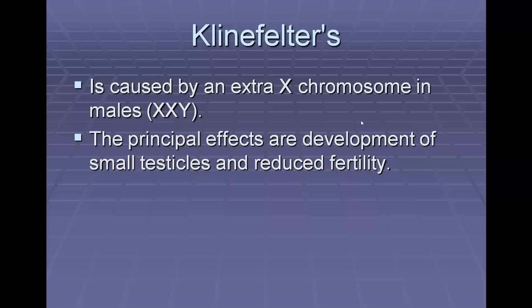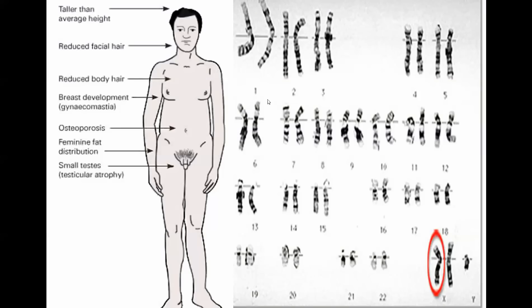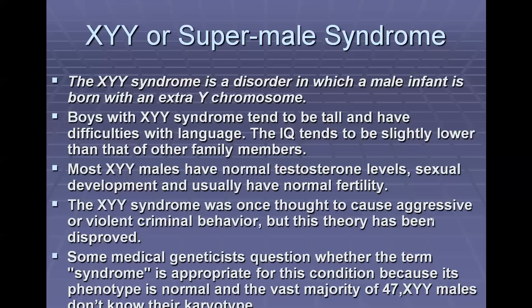Klinefelter syndrome is caused by an extra X chromosome in males, making them XXY. The principal effects are development of small testicles and reduced fertility. The karyotype shows everything paired normally except for the extra X chromosome. XYY or super male syndrome also occurs when homologous chromosomes don't separate properly. Boys with XYY tend to be fairly normal but just a little taller, with IQs that can be a little lower, and they can have difficulties with language. Whether it truly constitutes a syndrome is still debated among medical geneticists.